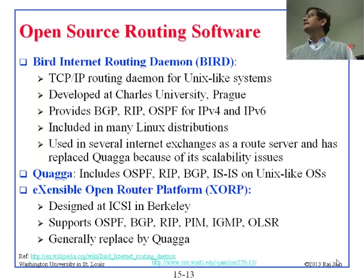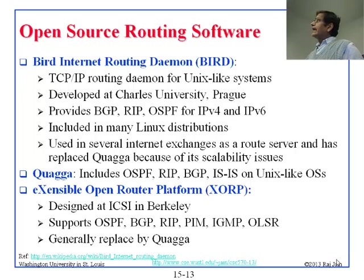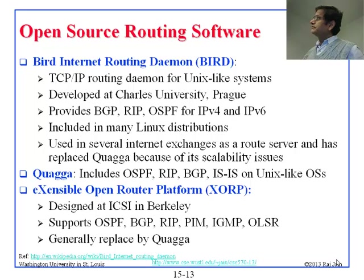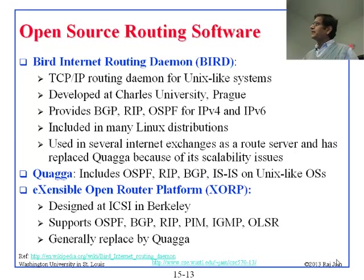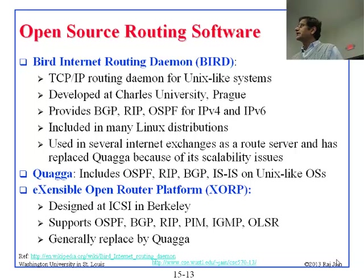The next one is BIRD — BIRD Internet Routing Daemon. It came from some European university. It has many features, and now it is slowly replacing Quagga. BIRD is used in several internet exchanges as a route server and has replaced Quagga because of Quagga's scalability issues.